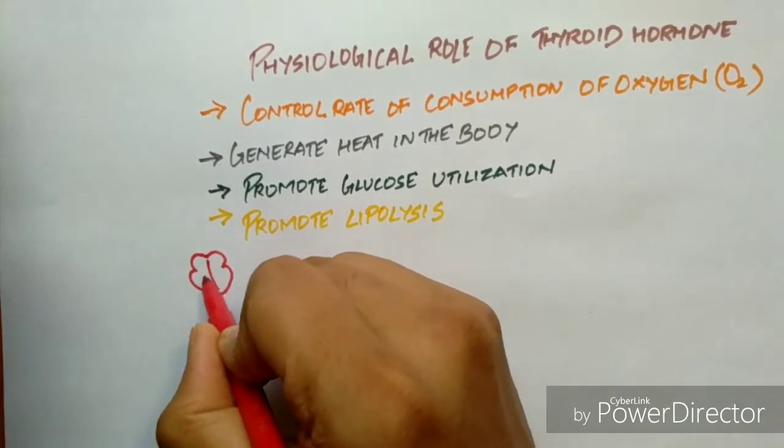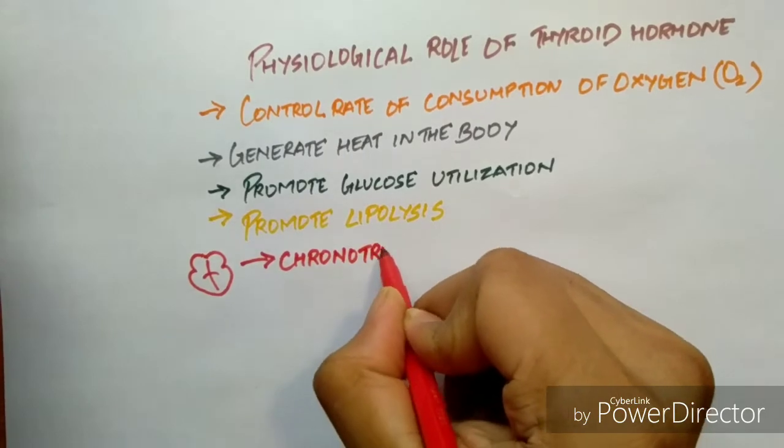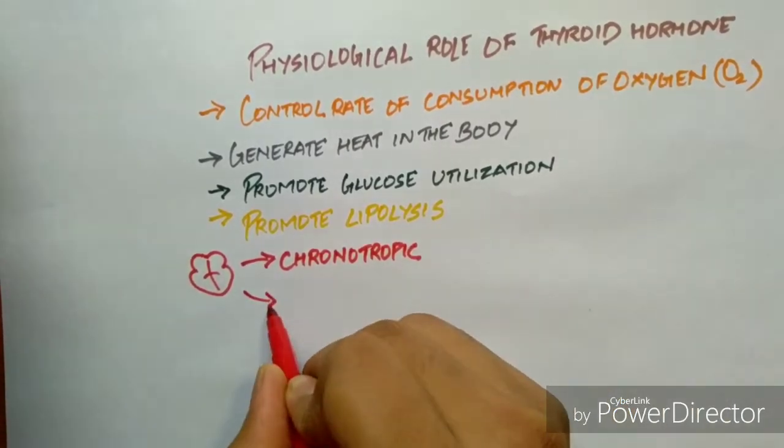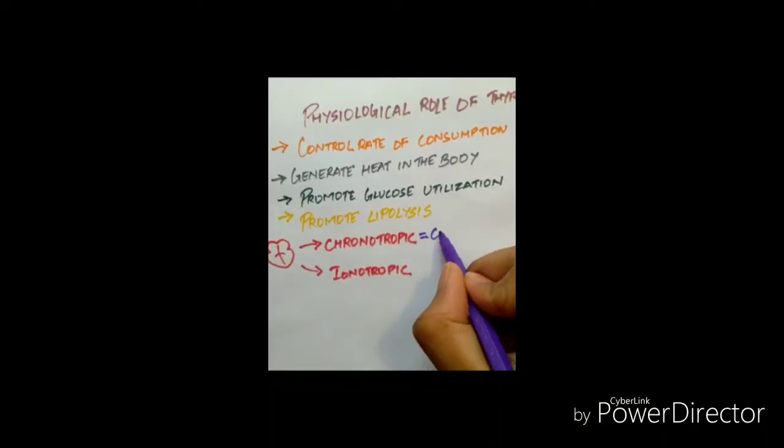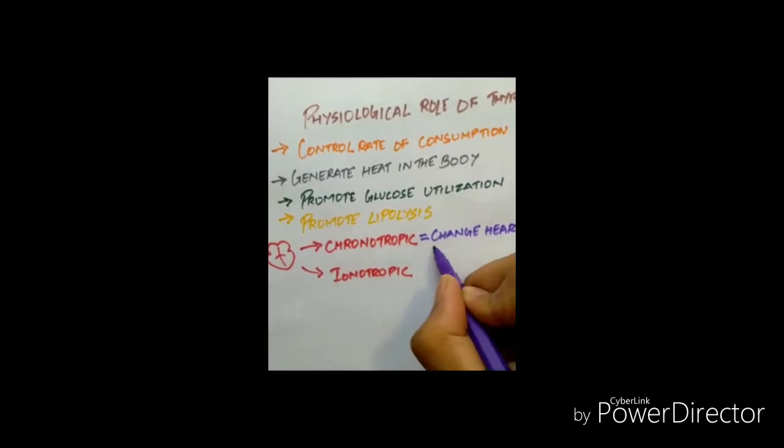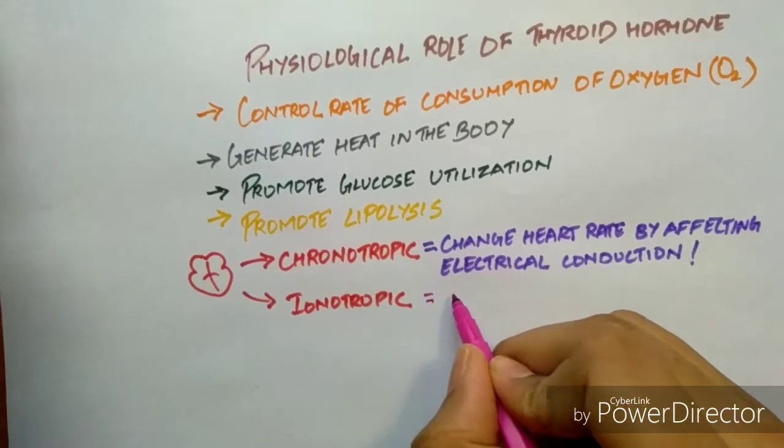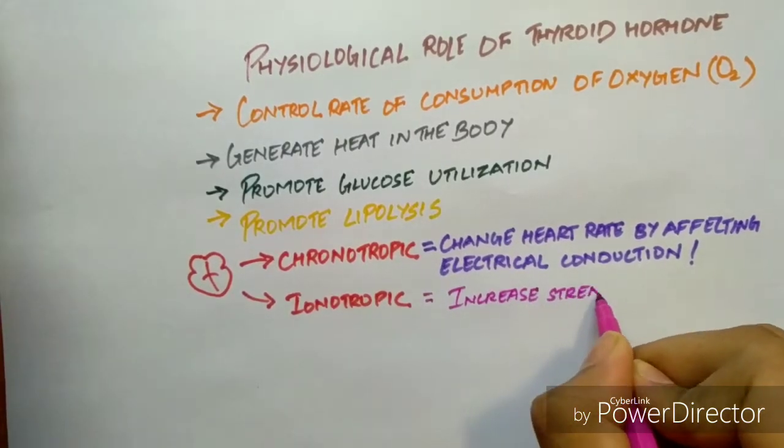For the heart, they give both chronotropic and inotropic effects. Chronotropic is change in heart rate by affecting electrical conduction, and inotropic is the increase in heart muscle strength for contraction, that is heartbeat.